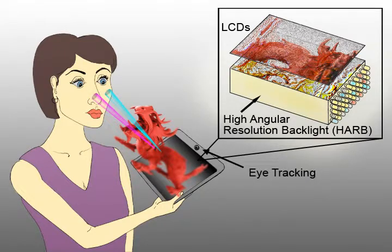A HAR backlight is capable of steering narrow, high-resolution light cones towards the eyes of the observer. We envision future implementations of high-angular resolution backlights to be thin devices, such as edge-lit light guides, as shown at top.